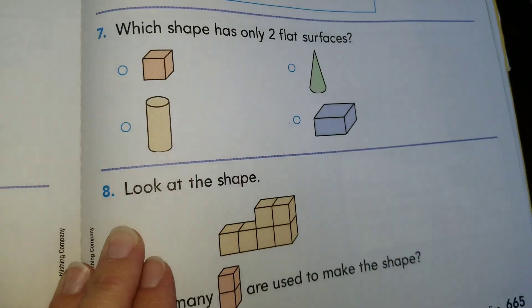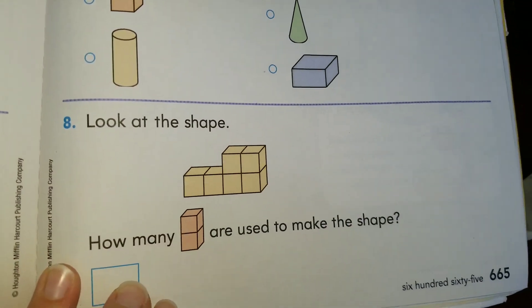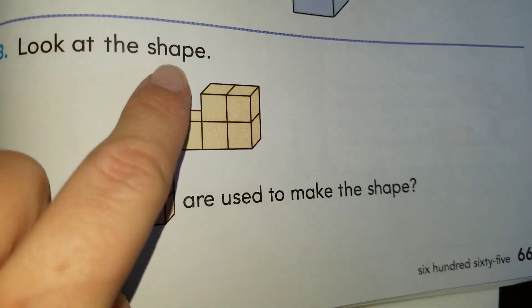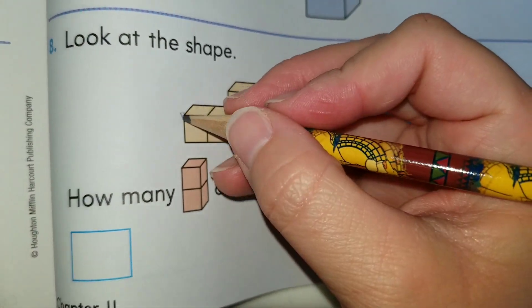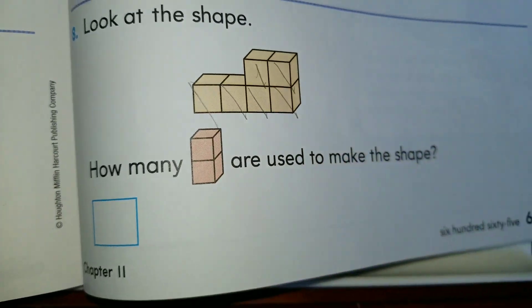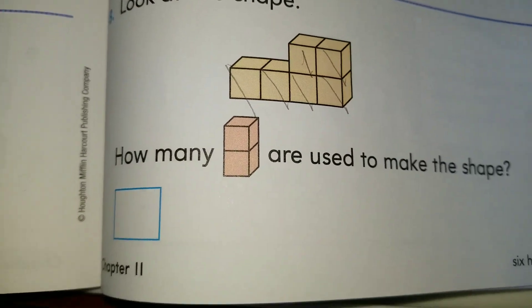Let's move on to number eight — this is the last one on this page. It says look at the shape: how many cubes are used to make the shape? We have one, two, three, four, five, and six. So you go ahead and write it down. There are six cubes on that wall.